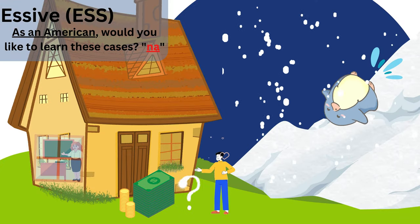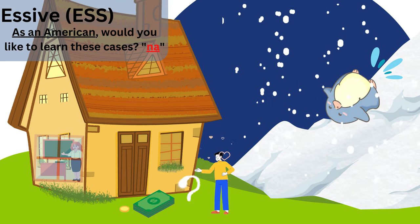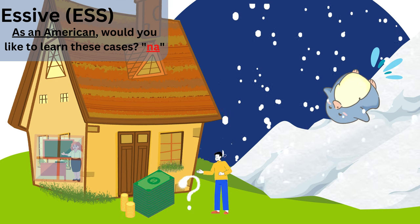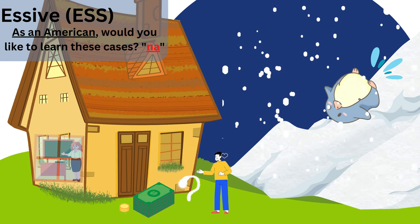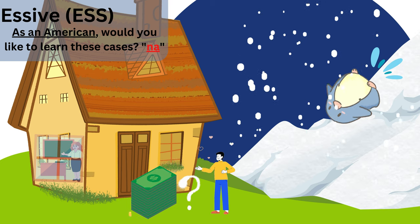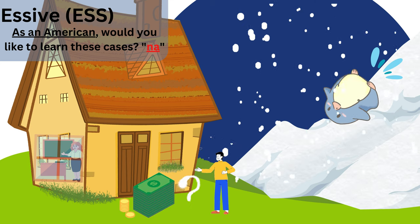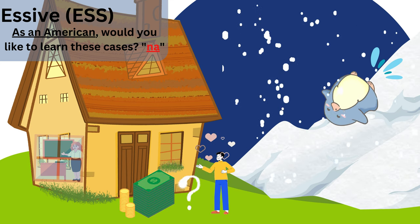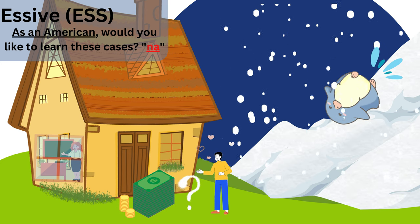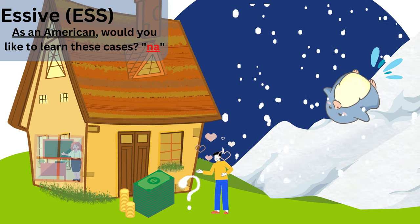Next, let's look at the five marginal cases. The first case in the mnemonic is the essive case. Its basic meaning is 'being,' as in 'as an American.' It may also be used to indicate time, but not clock time — for example, it can be used as 'on Monday' or 'in December.' The mnemonic for this case is 'as an American, would you like to learn these cases? No,' because -na/-nä is the case ending for the essive case, and a common phrase you'll see this case in is 'as an XYZ,' for example, 'as an American.'